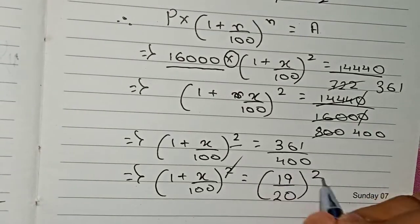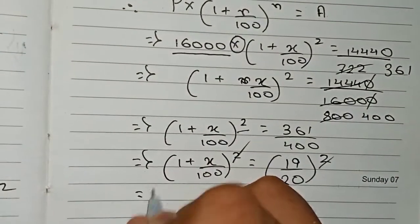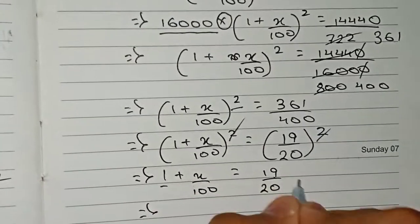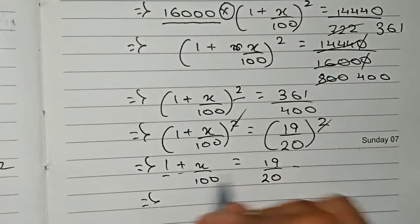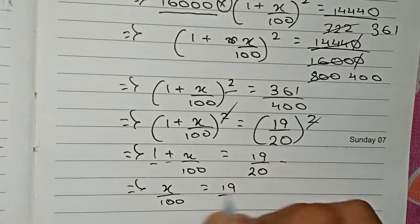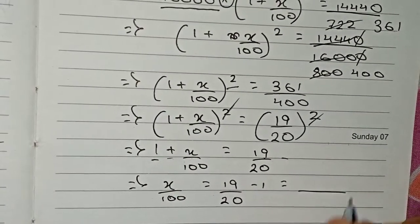Now we cancel the square, so now only remains 1 plus x/100 equals 19/20. So now we take this 1 to this side. As it is addition here, it will go for subtraction to this side. x/100 equals 19/20 minus 1.